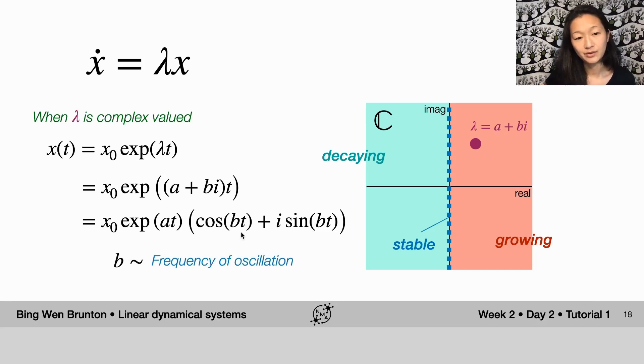What you can see here by looking at this equation, cosine of bt and sine of bt, is that b, the imaginary component, now determines the frequency of oscillation.